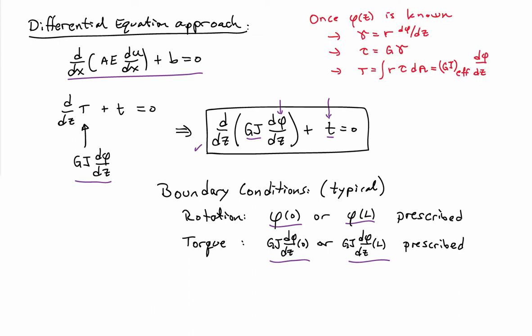And then once φ of z is known, you can go ahead and back-calculate any quantity that may be of interest. So you can calculate the shear strains by taking a derivative, multiply by G to get the shear stresses, and then if you would like, you can get the torque by multiplying the twist rate by GJ.